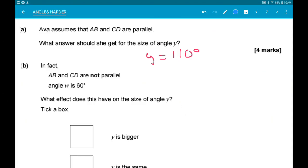Okay, but then for part B, we are told in fact AB and CD are not parallel. Angle W is 60 degrees. What effect does this have on the size of angle Y?